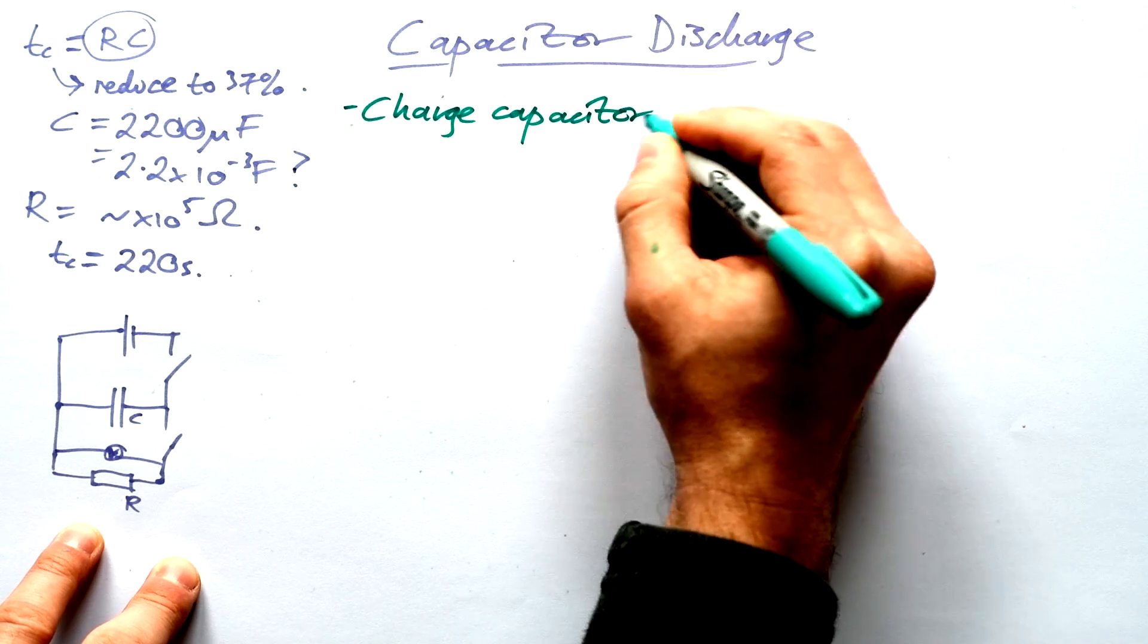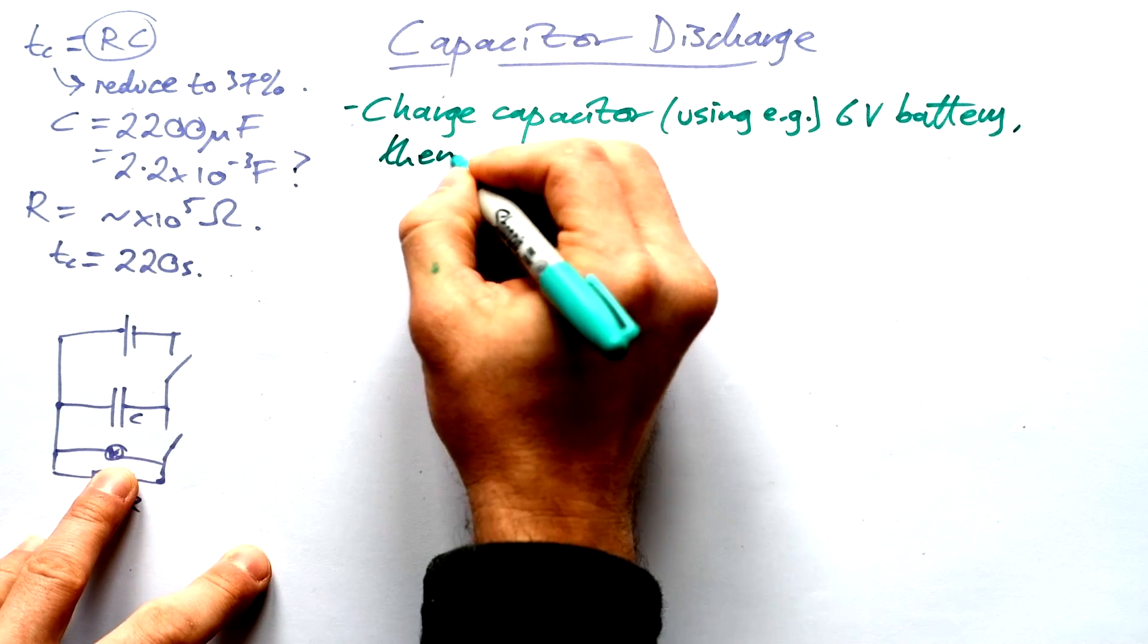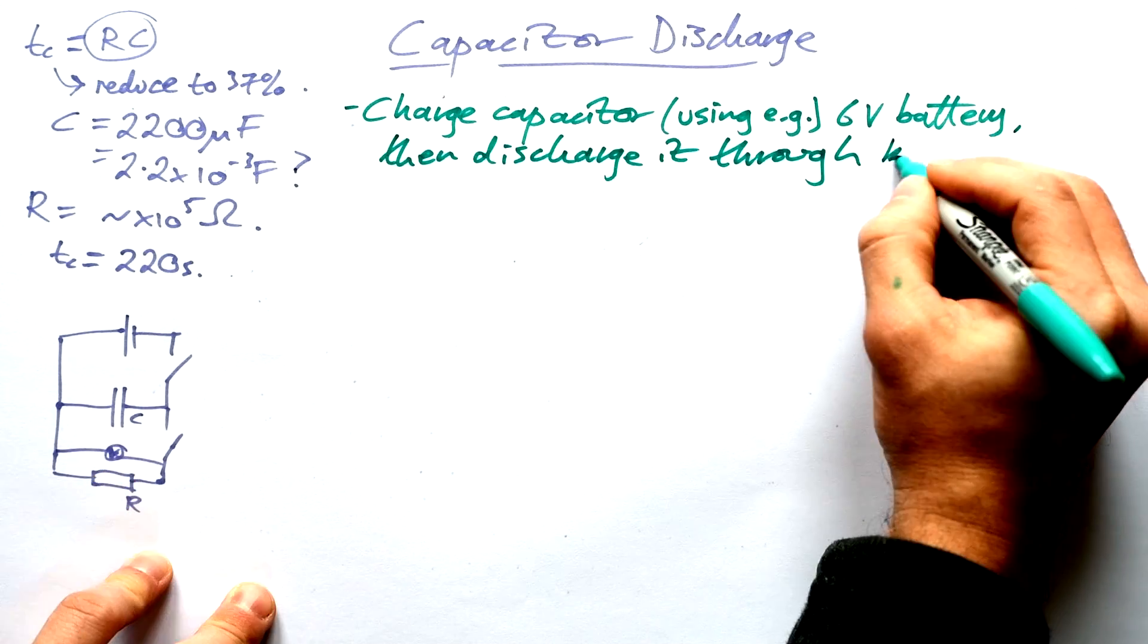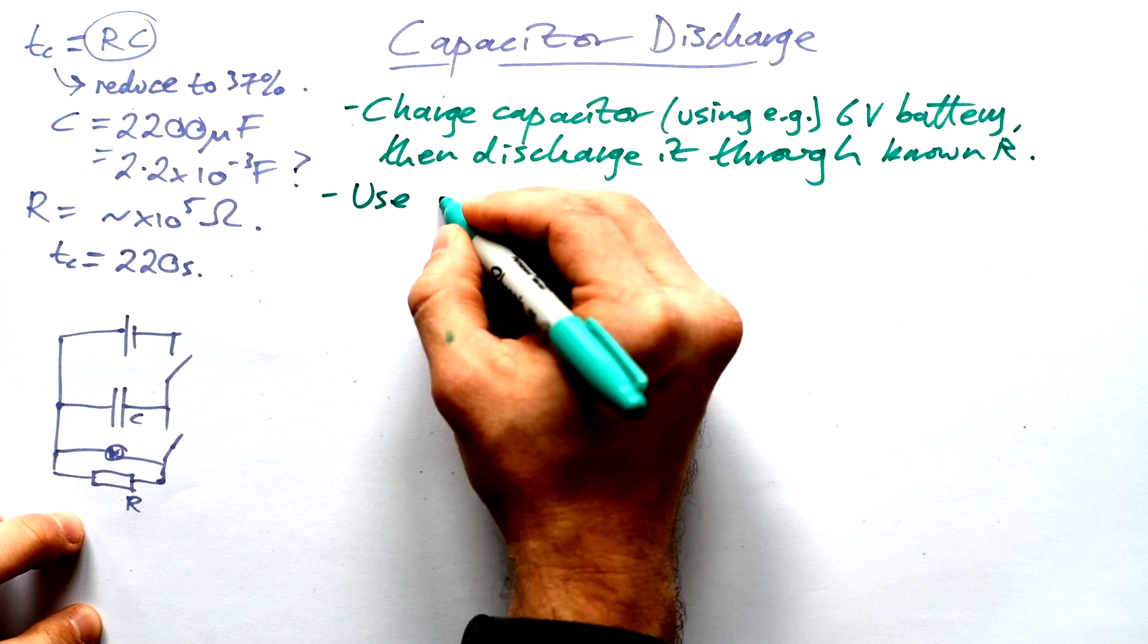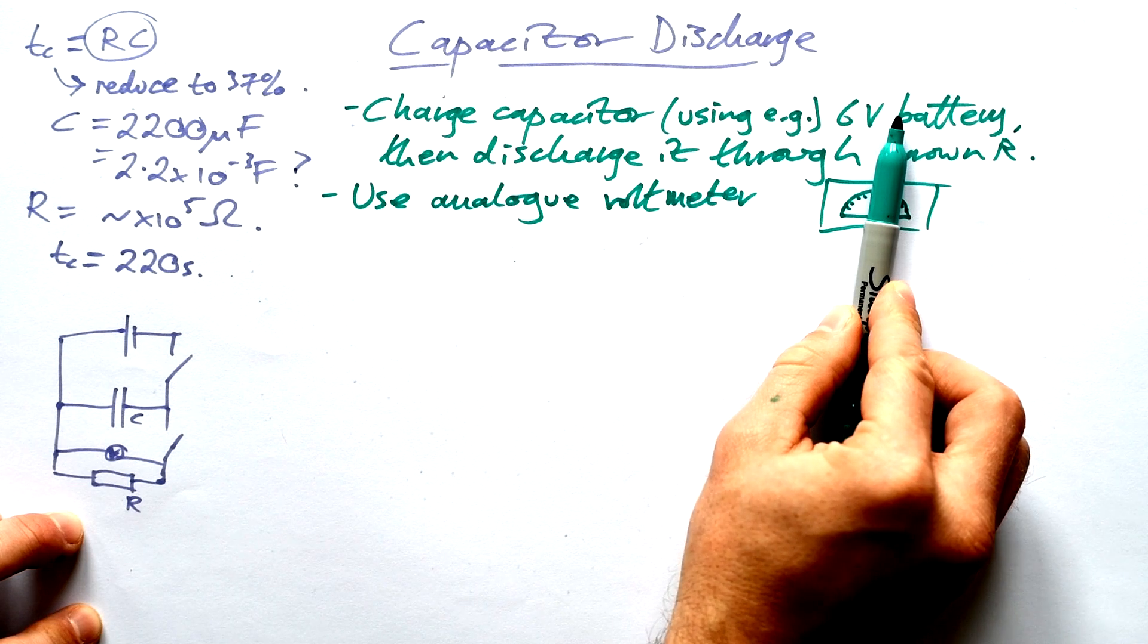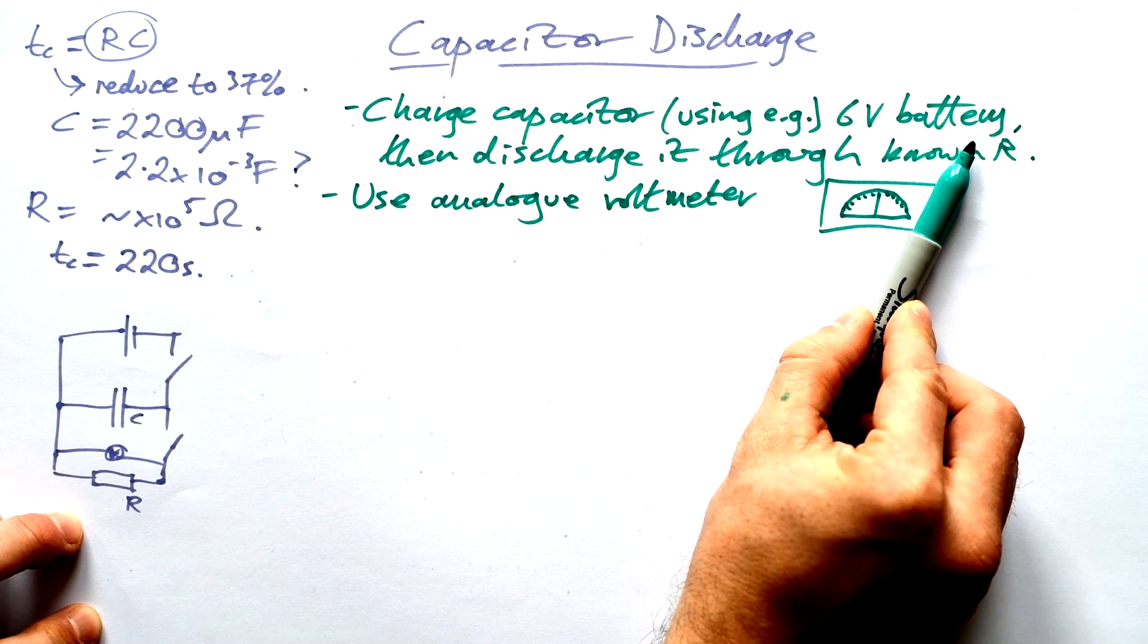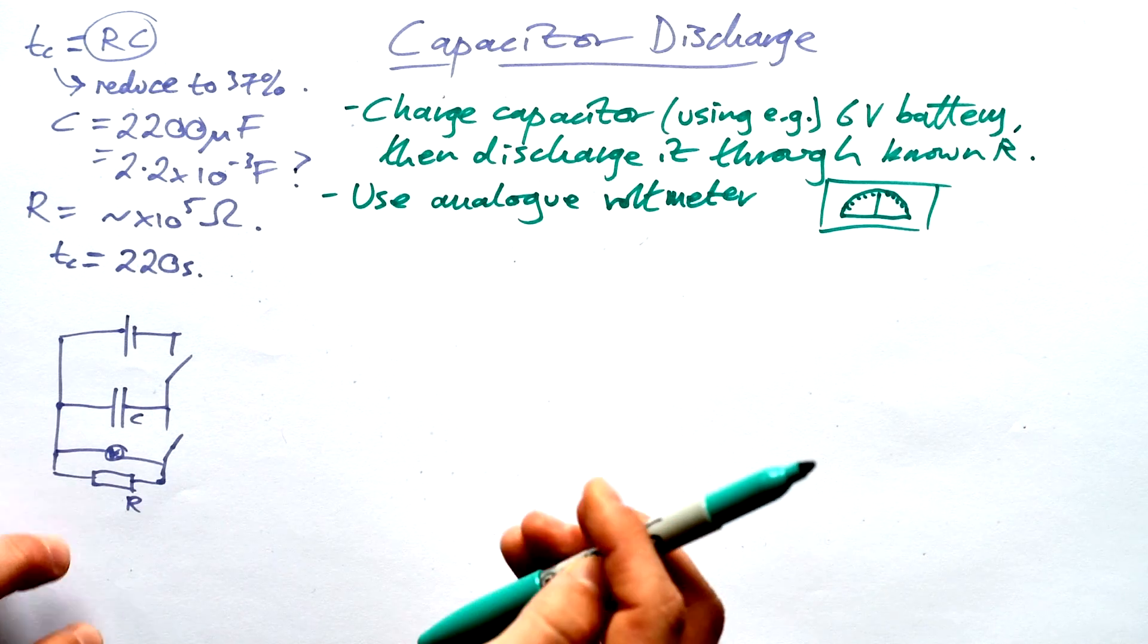So we're going to charge the capacitor using, for example, a 6 volt battery. Then discharge it through known resistor. We're going to use, preferably, an analog voltmeter. And what will happen is that the needle will deflect and then it will start coming back down because the PD will be decreasing across the capacitor.